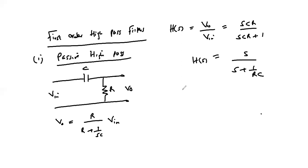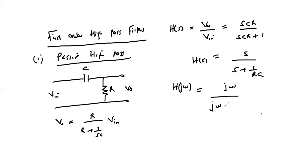We can confirm that this transfer function implements a high pass filter by obtaining it in the frequency domain. We substitute s = jω to get H(jω) = jω over (jω + 1/RC).